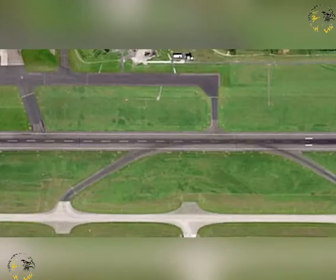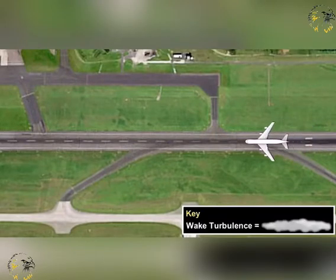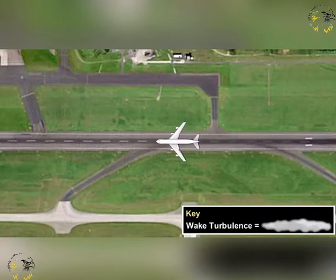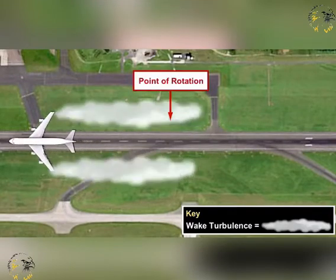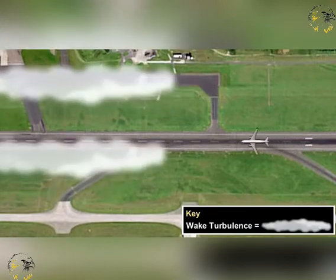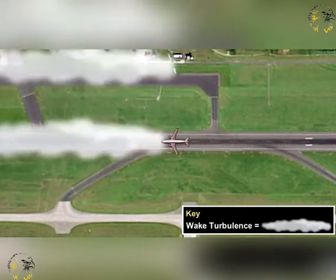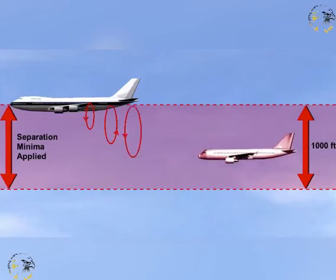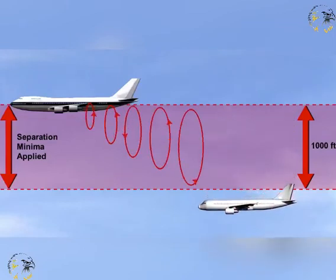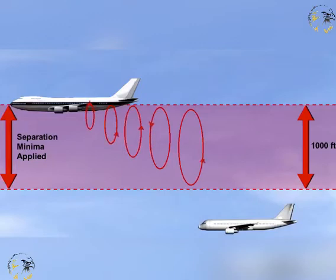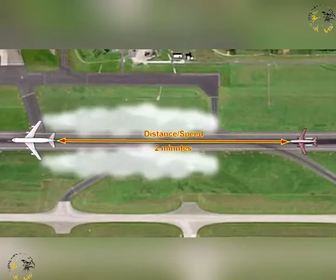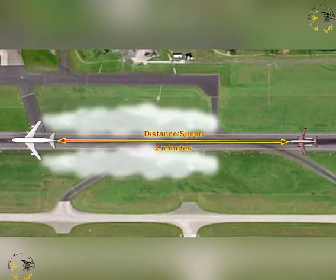Separation minima is applied to aircraft under the following circumstances: when two aircraft are using the same runway, either for take-off or landing, whenever a following aircraft is at the same height as, or less than, 1,000 feet below the leading aircraft. Wake turbulence separation can either be based upon time — procedural separation — or distance, when the aircraft is under direct radar control.